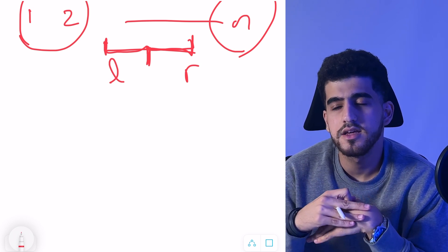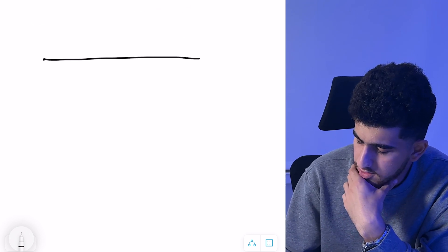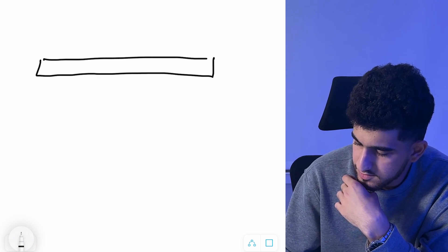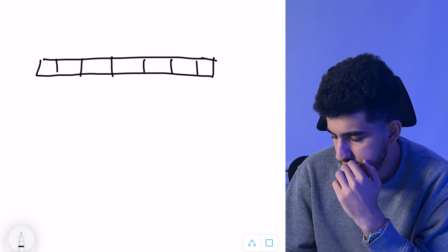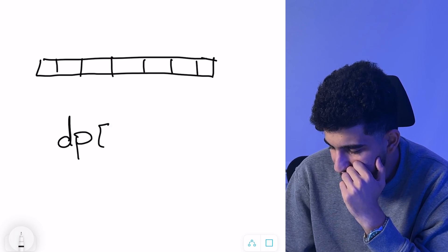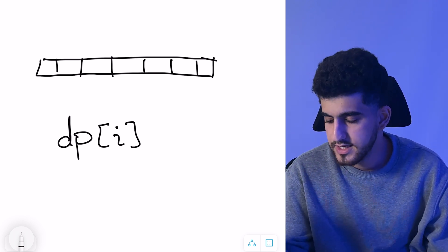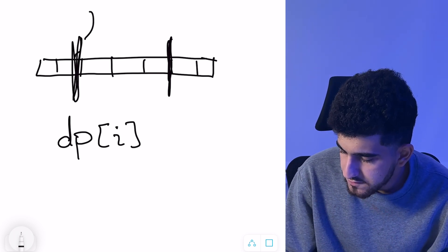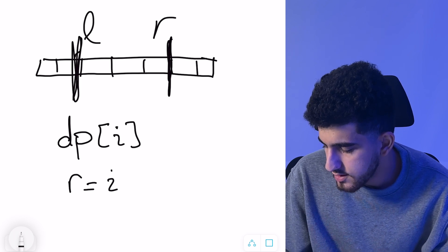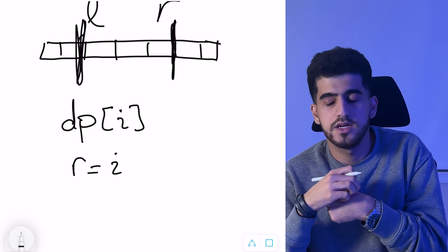Pause the video again and think more with this knowledge. Now, we can consider all distinct values in the array in a sorted vector. We define dp[i] as the maximum possible number of elements whose order we do not change, where i is the last (largest) number whose order we preserve — i.e., R equals i in the interval.